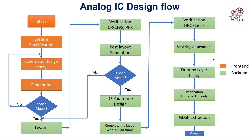Then complete your layout with the IO pad frame design. Then run verification again — mainly DRC check. Then you have to attach the seal ring provided from the PDK itself or the foundry. The seal ring can be customized depending upon your die size. Then you have to fill dummy layers to maintain the metal density specification. Next, run the DRC check verification again.